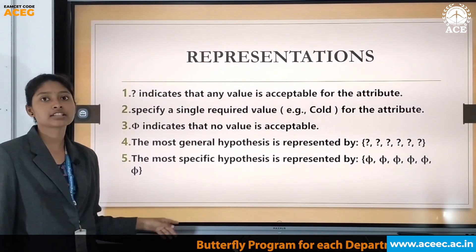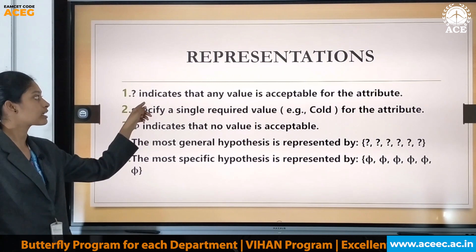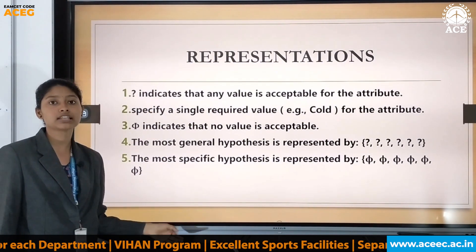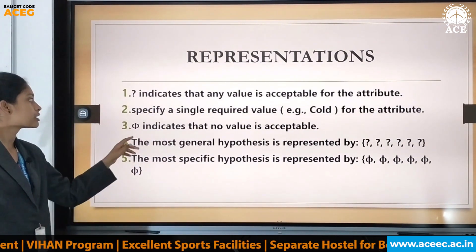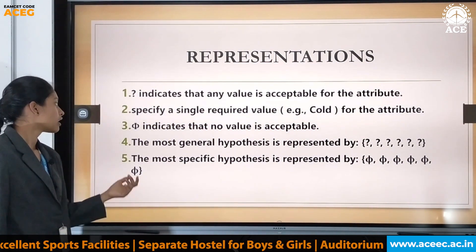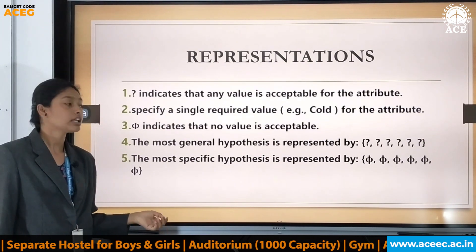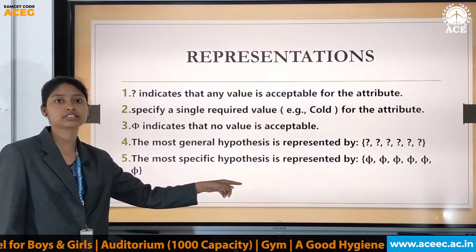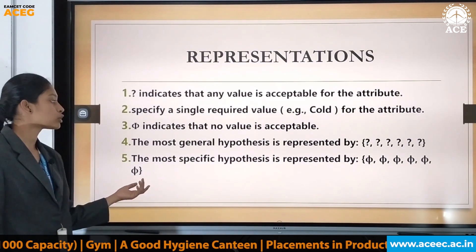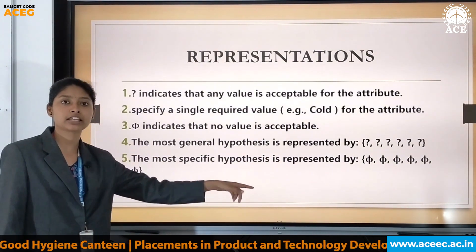In the representations used in Find S: a question mark indicates that any value is acceptable for the attribute; a specific value specifies a single required value; and phi indicates that no value is acceptable. The most general hypothesis is represented by a set of question marks, and the most specific hypothesis is represented by a set of phi values.